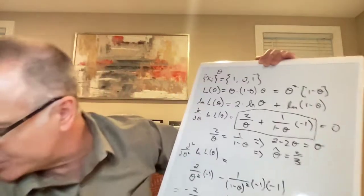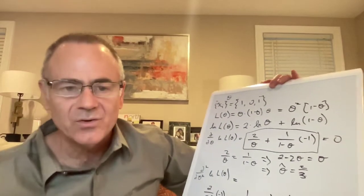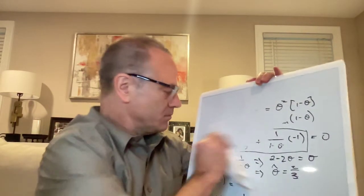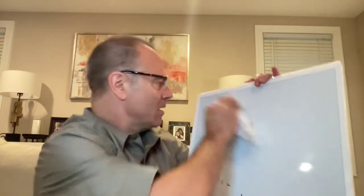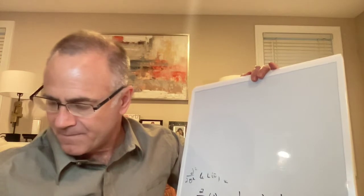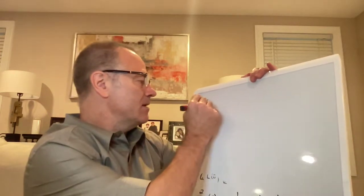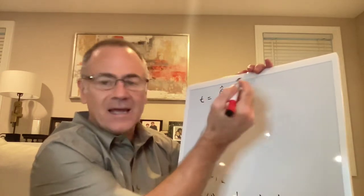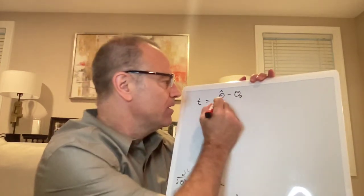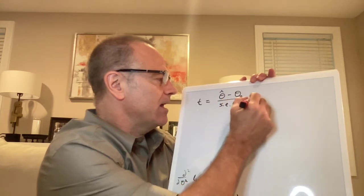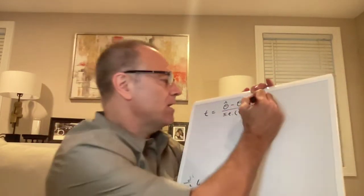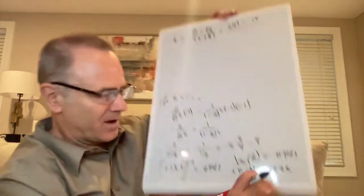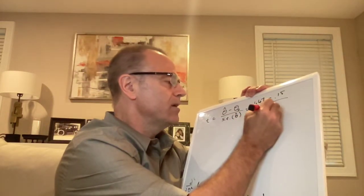And so we now do another test using a t statistic. What we can do is we can say t equals theta hat minus the mean, what it should be the mean, now if our null is true, divided by the standard error of theta hat. Let's plug in those values. Theta hat equal to 0.6667, our null was 0.15, and our standard error was 0.2722.